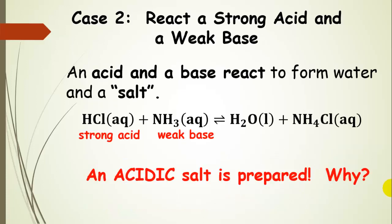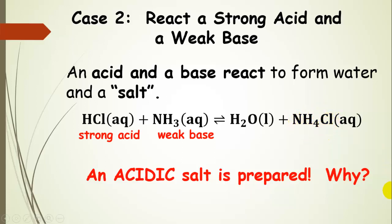Case two is more interesting. We react a strong acid with a weak base. The strong acid reacts completely with the weak base, and we still produce water, plus the salt ammonium chloride. The weak base accepts a proton from the strong acid to produce ammonium (NH₄⁺), and chloride anion is the conjugate base. This salt is acidic in solution.